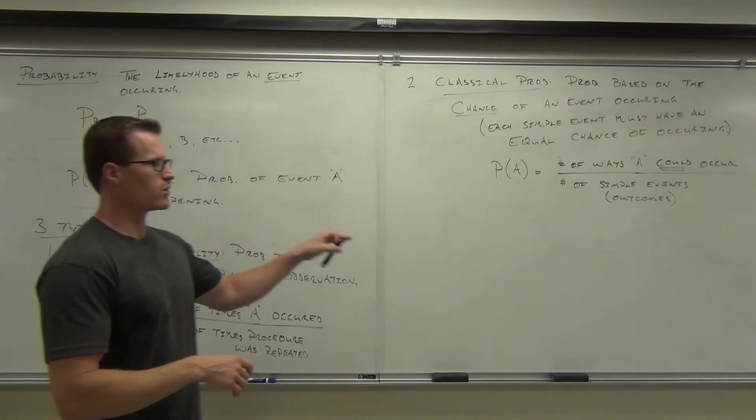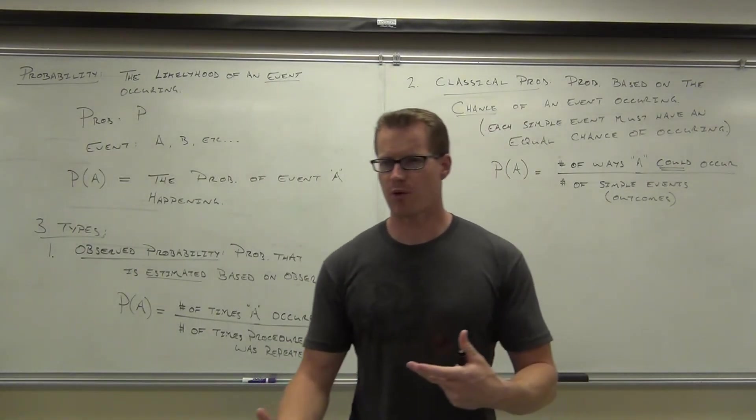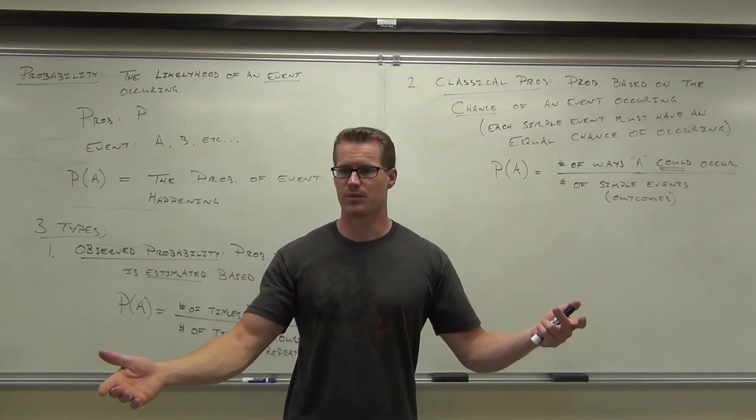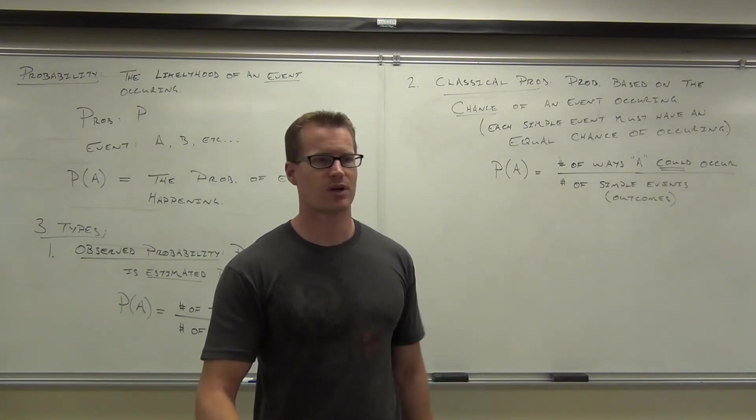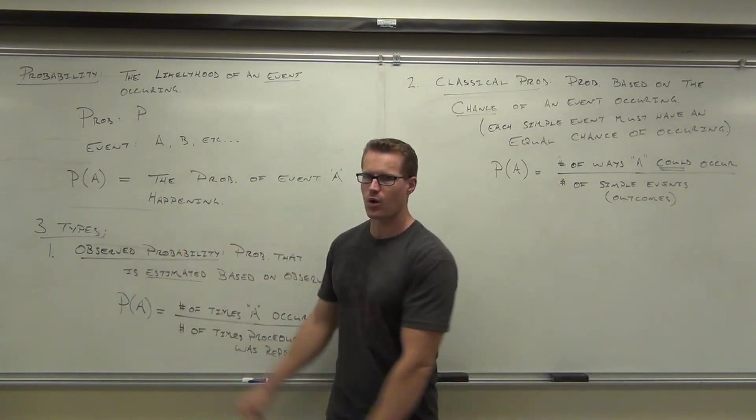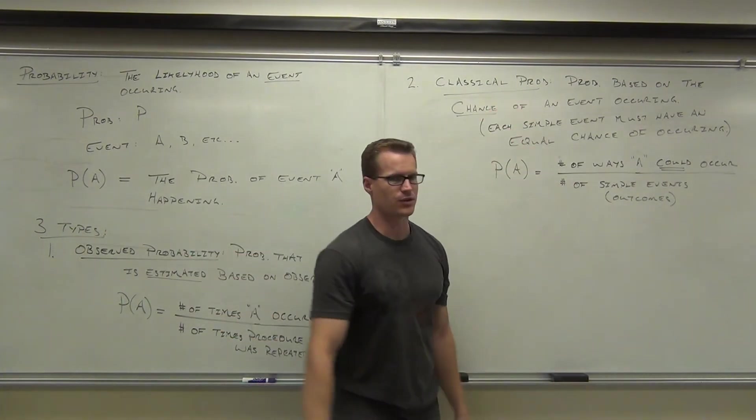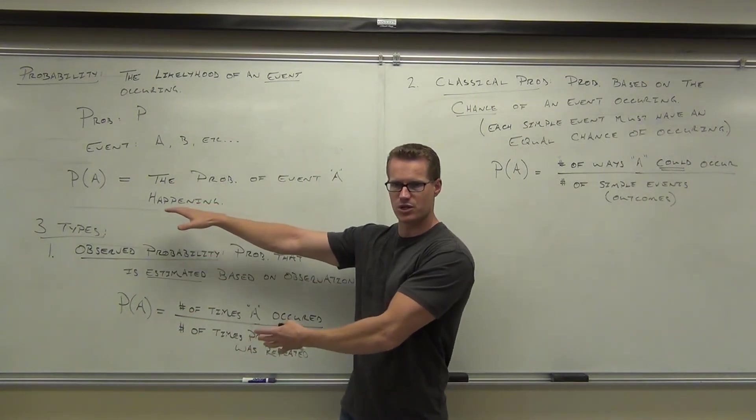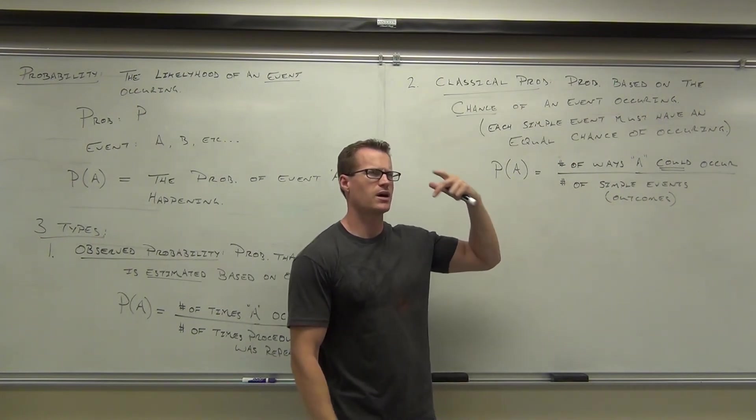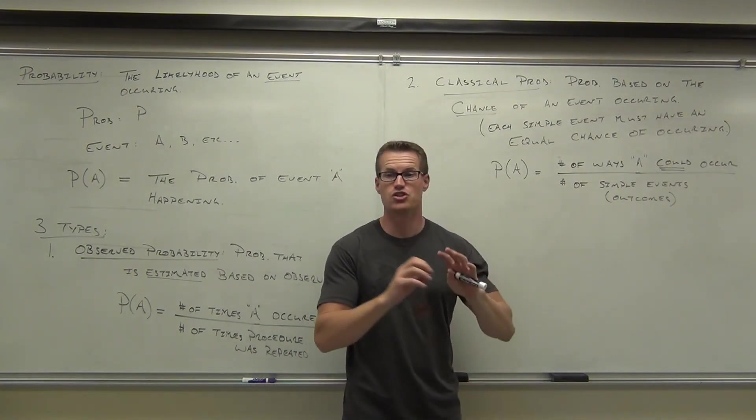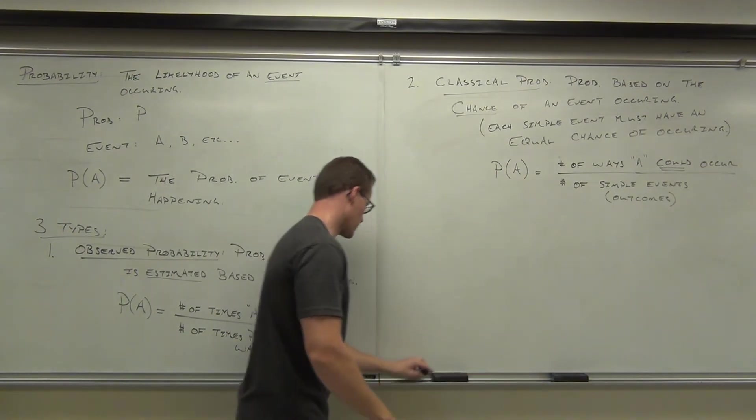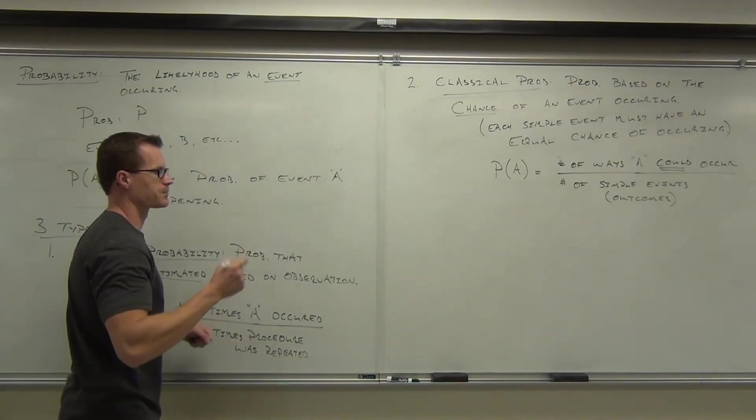I need to recap just a little bit before we go any further. You really need to understand the difference between observed probability and classical. I'm going to ask you on your test. I'm going to give you a problem and say, what is this? Calculate the probability. Tell me if it's observed or classical. That's going to be like three or four problems on your test. So you need to be able to identify, are you doing something, or are you just thinking about it? That's the difference.